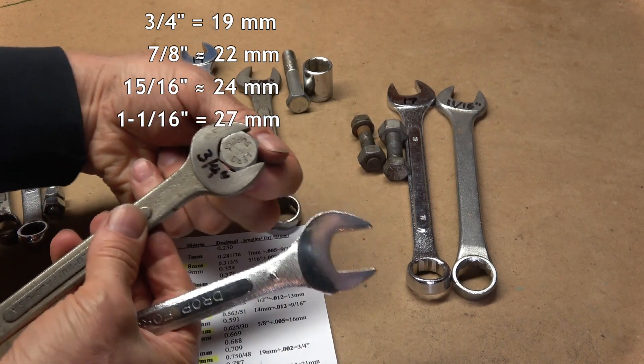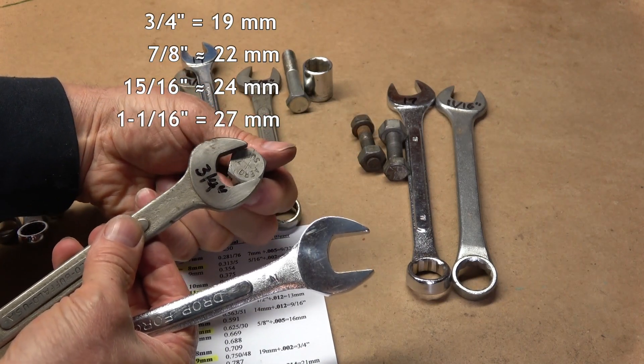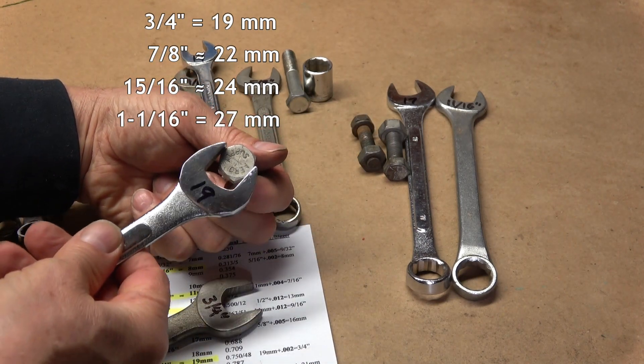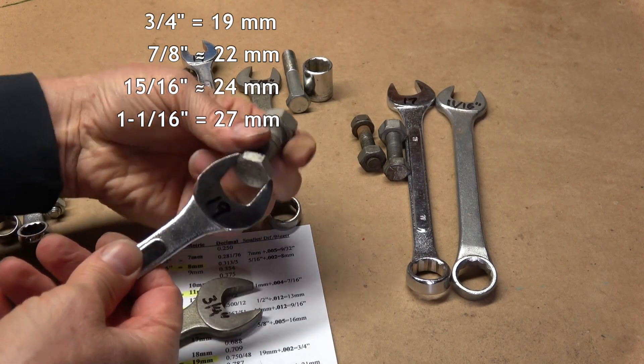And lastly, 3 quarter inch is almost identical to 19 millimeters, and there are many more that are interchangeable as the sizes get larger.